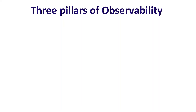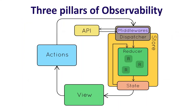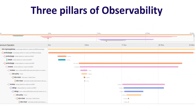The third pillar is traces. Distributed tracing is the capability to track and observe service requests as they flow through a distributed system by collecting data as requests go from one service to another. The trace data helps you understand the flow of a request through your microservice environment and pinpoint where failures or performance issues are occurring in the system. It is a diagnostic technique that reveals how a set of services coordinate to handle individual user requests.